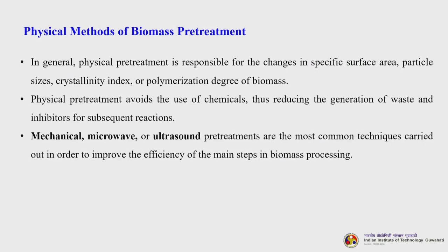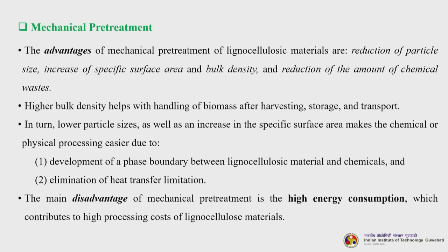Physical pretreatment is responsible for changes in specific surface area, particle sizes, crystallinity index and polymerization degree of biomass. It avoids the use of chemicals, thus reducing the generation of waste and inhibitors for subsequent reactions. Mechanical, microwave or ultrasound pretreatment are the most common techniques. The advantages of mechanical pretreatment of lignocellulosic materials include reduction of particle size, increase of specific surface area and bulk density, and reduction of chemical waste. Higher bulk density helps with handling, storage and transport of biomass after harvesting. Lower particle sizes and increased surface area make chemical or physical processing easier by developing a phase boundary between lignocellulosic material and chemicals, and eliminating heat transport limitations.